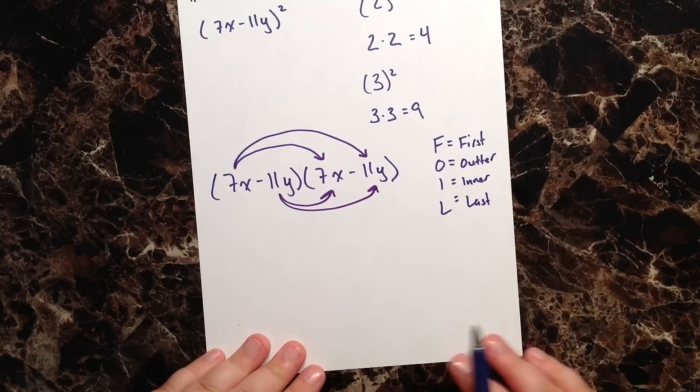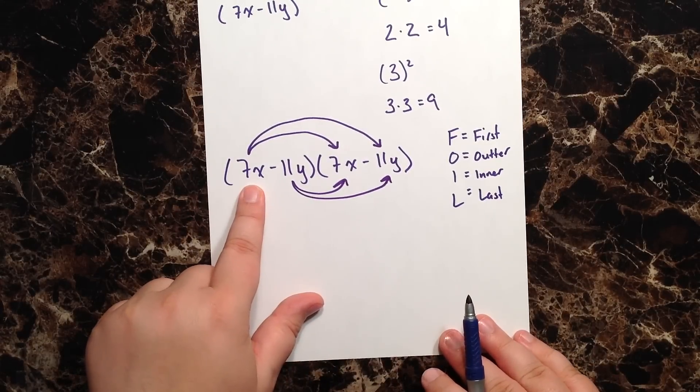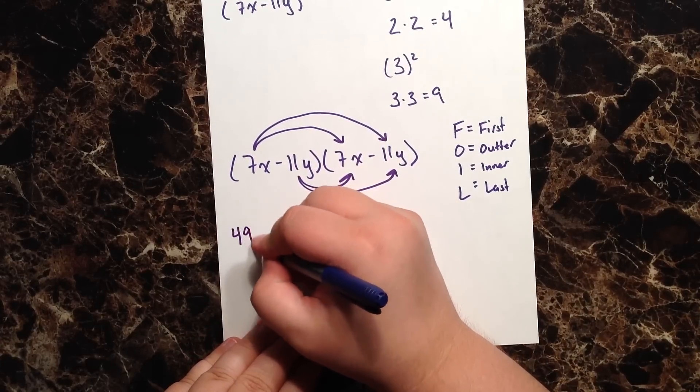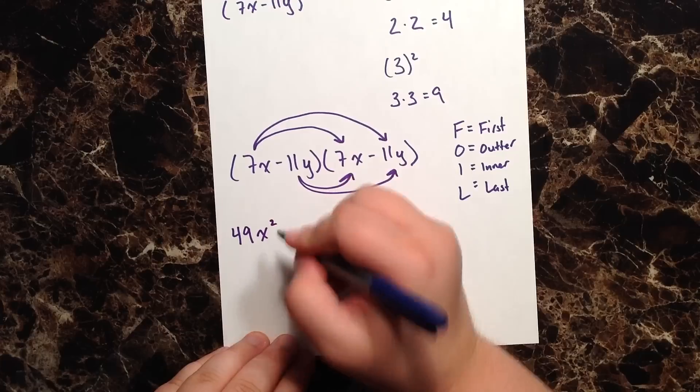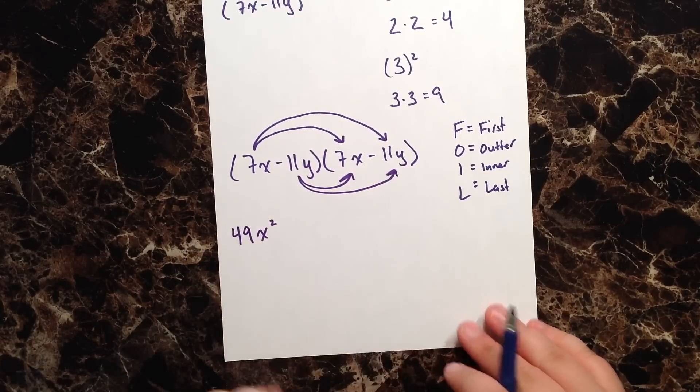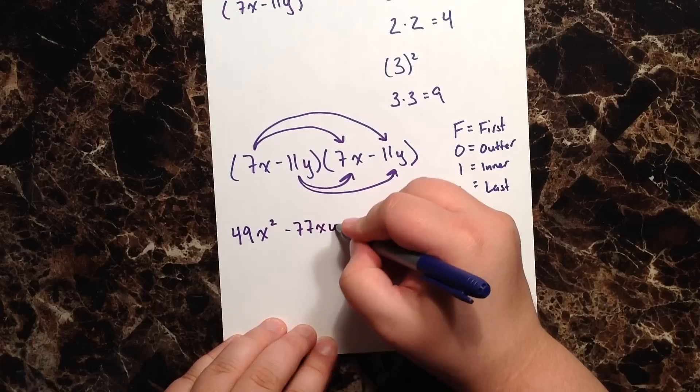Let's start doing the multiplication here. 7x times 7x, well 7 times 7 is 49 and x times x is x². 7x times -11y, well that's -77xy.